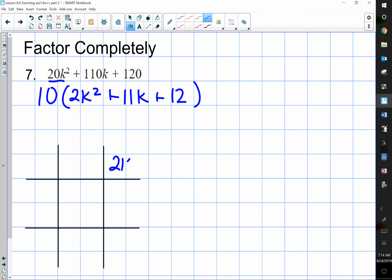I take what's left, put it in the table, and factor that out. So, to get 2k squared, I multiply 2k times 1k. To get 12, I multiply 3 times 4, cross multiply to get 8k plus 3k, and that equals 11k.